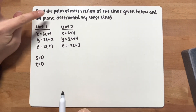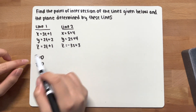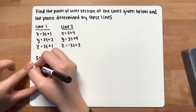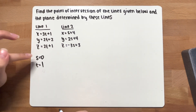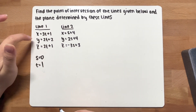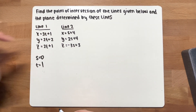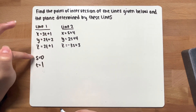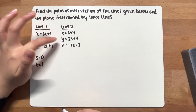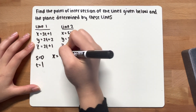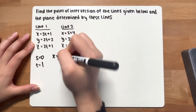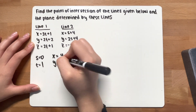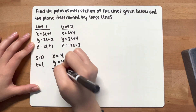Next step: to find the point of intersection, you just plug these values in — t = 1, s = 0. You're going to plug these values into either line 1 or line 2. Since line 2 has the s variable, substitute s = 0 into line 2. So x = 0 + 4 = 4, y = 2(0) + 4 = 4, and z = 3.